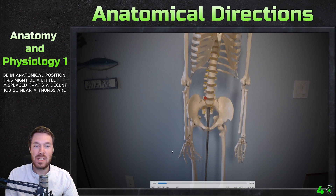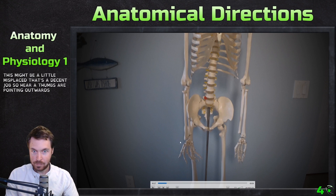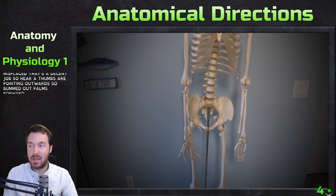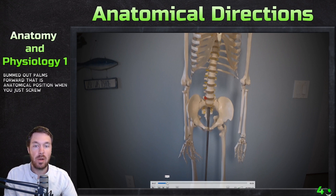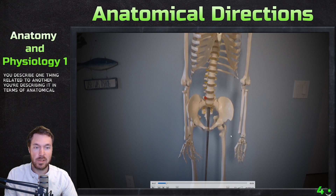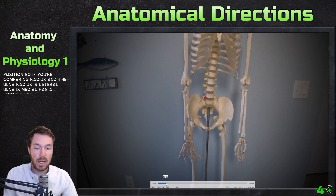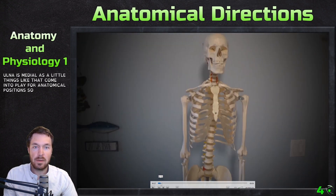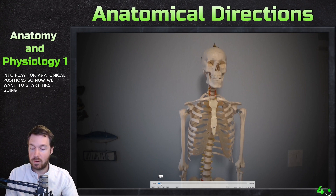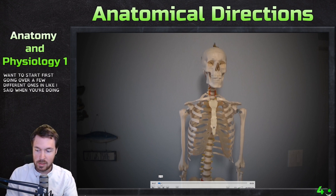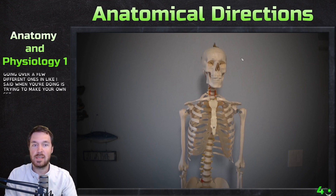Thumbs are pointing outwards — so thumbs out, palms forward. That is anatomical position. When you describe one thing related to another, you're describing it in terms of anatomical position. So if you're comparing radius and ulna, radius is lateral and ulna is medial. When you're doing this, try to make your own sentences out of these too.